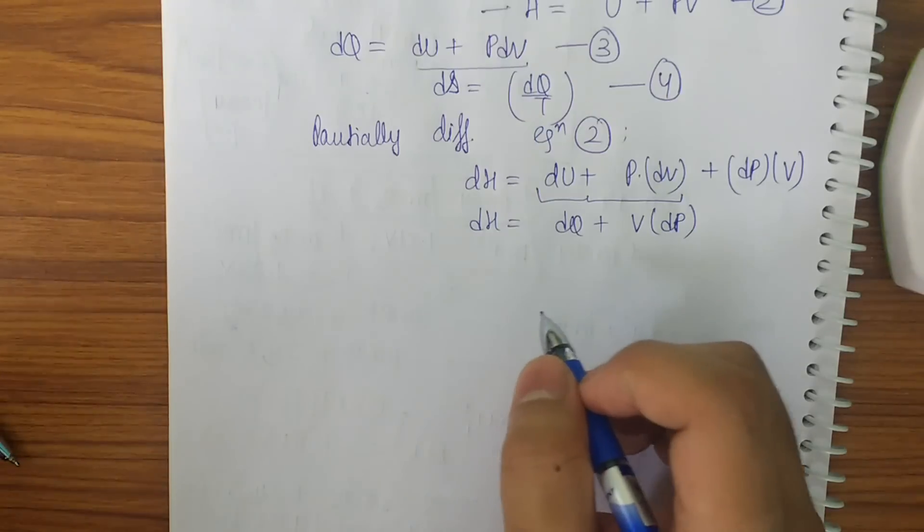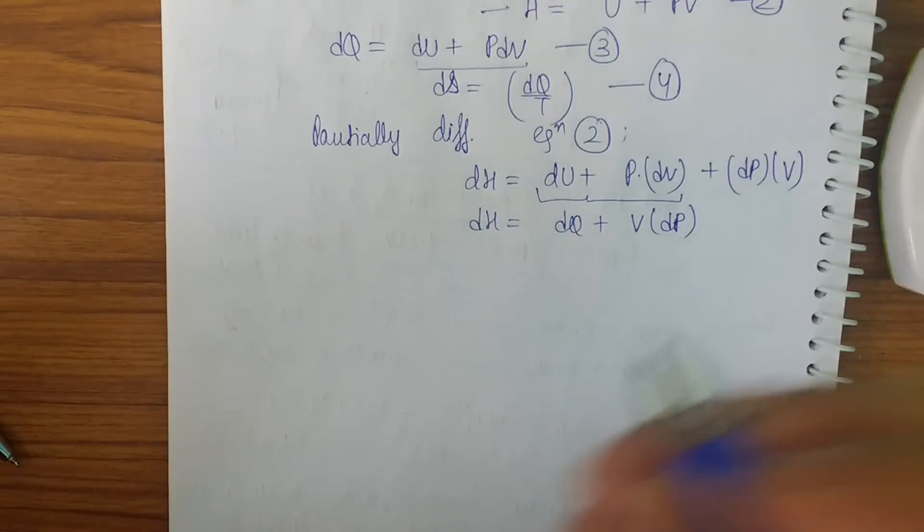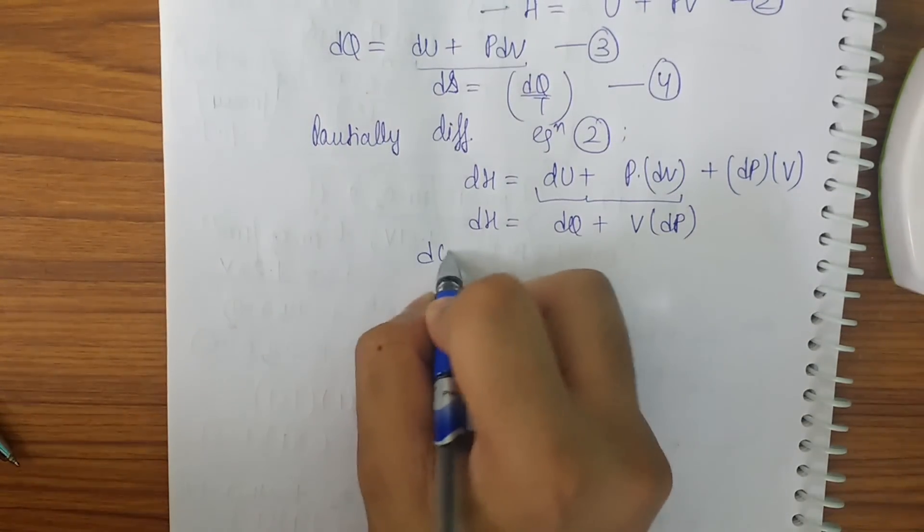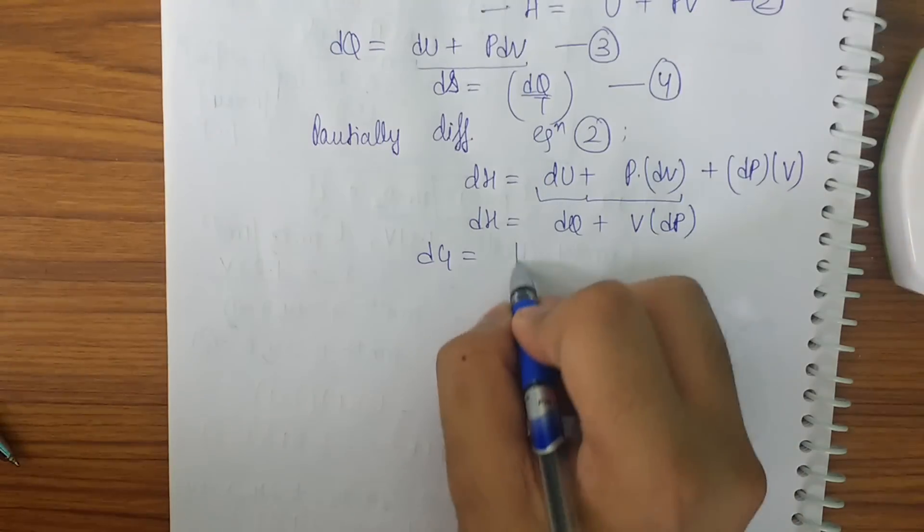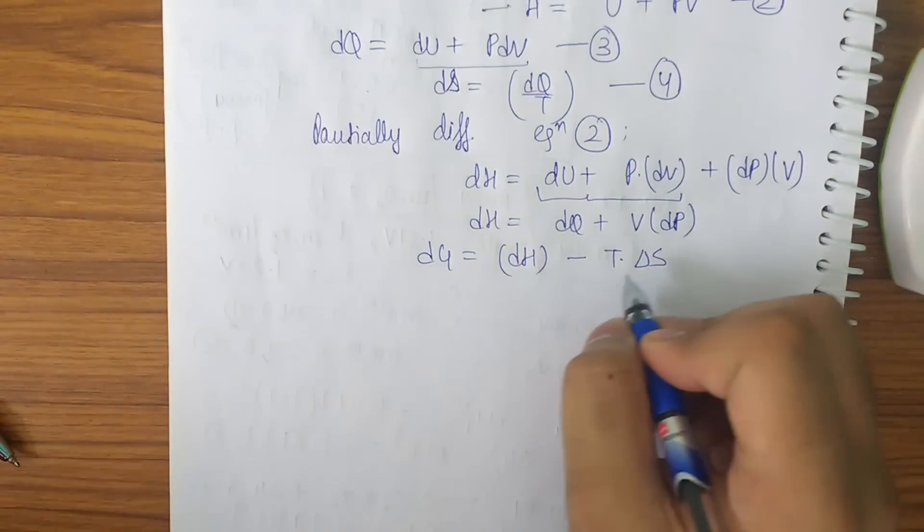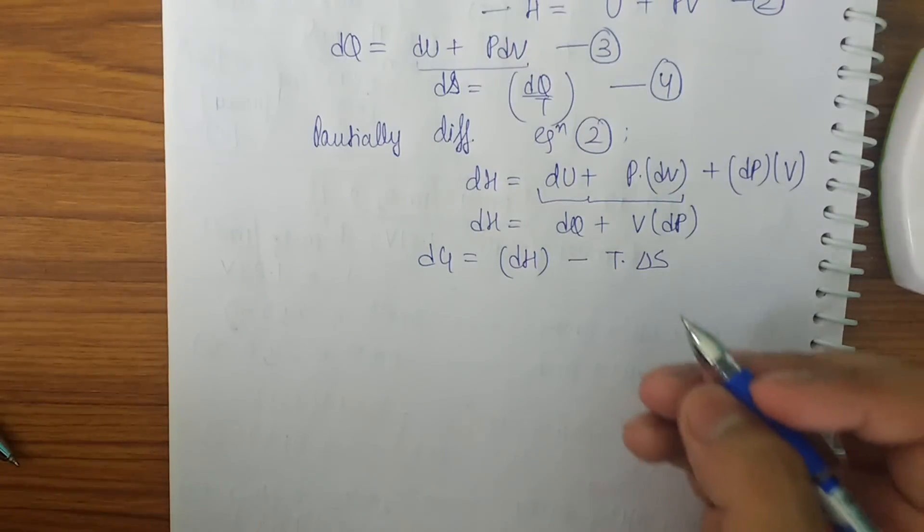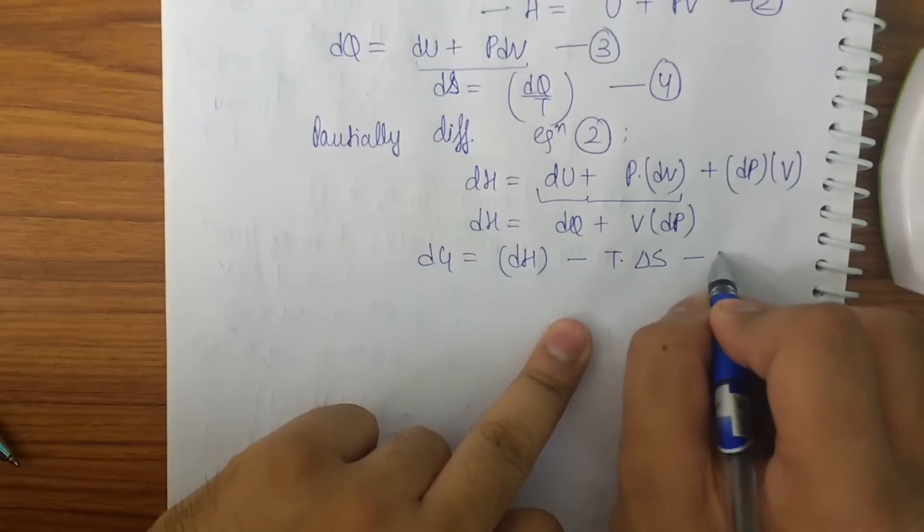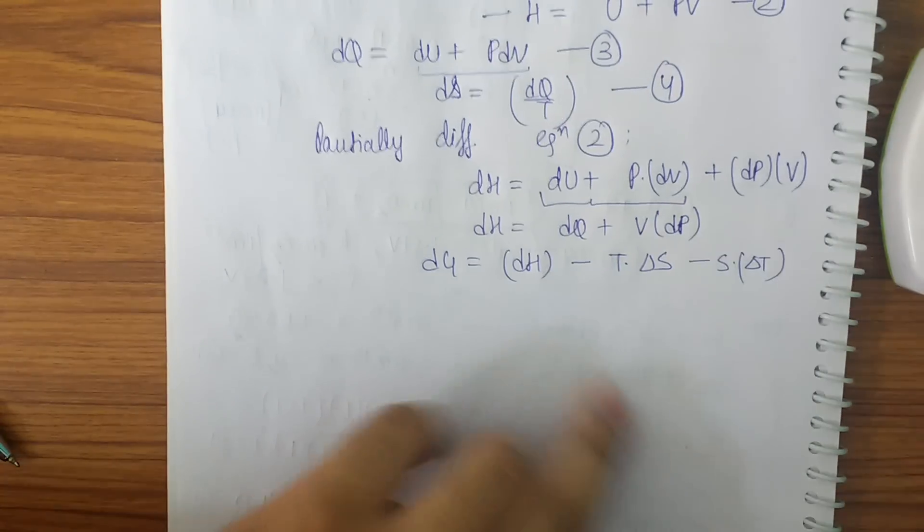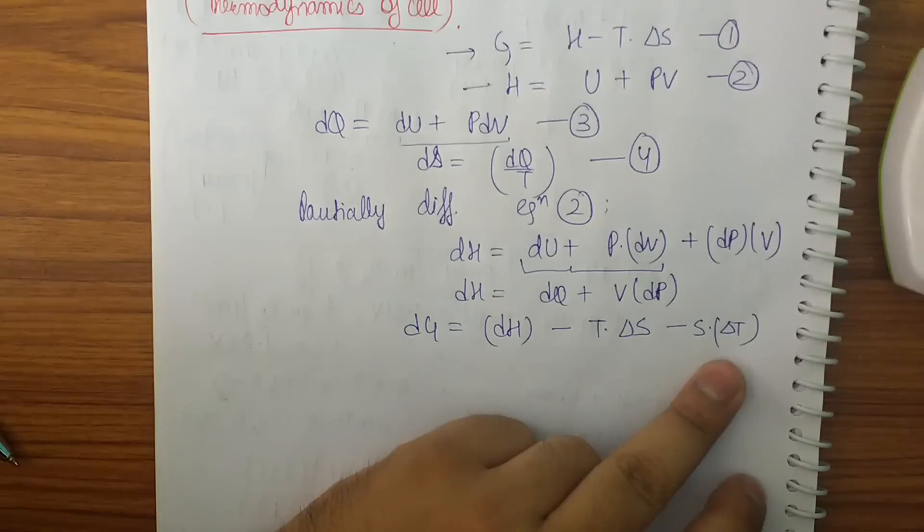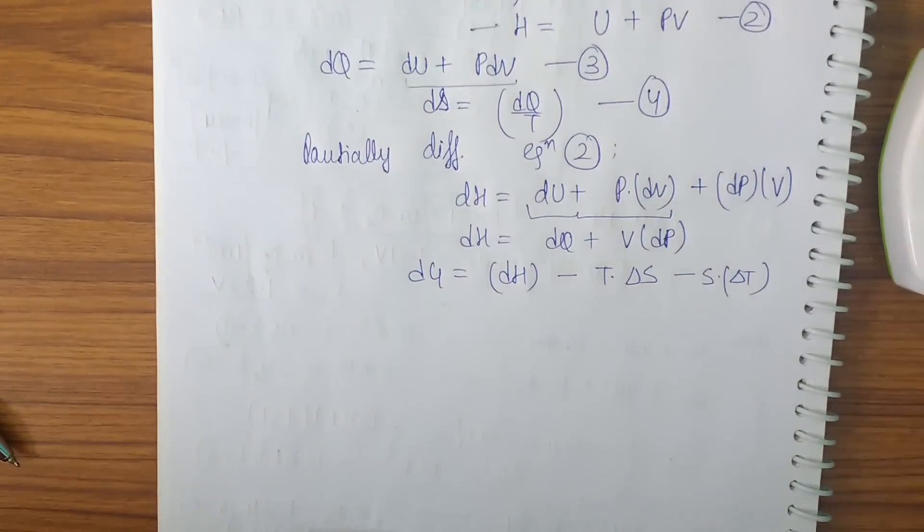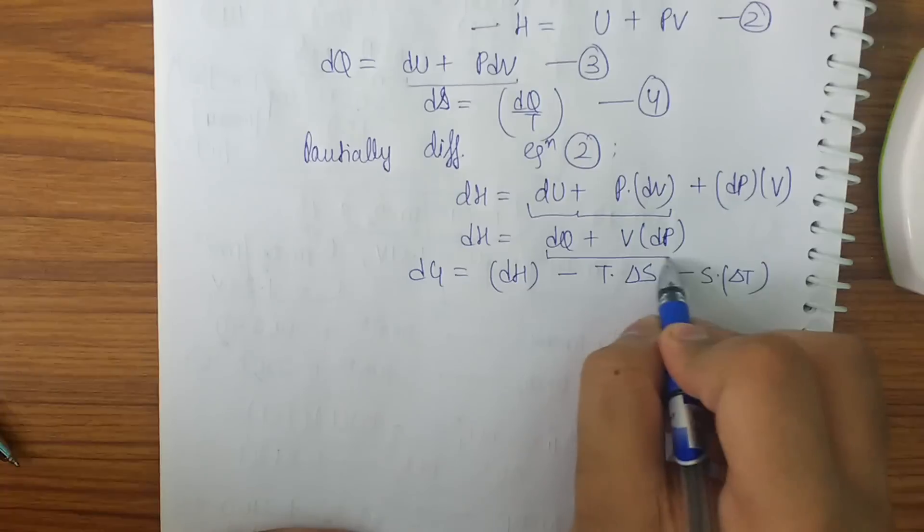Now let's differentiate equation number one. In the similar way we can differentiate equation number one and we can get DG to be DH minus T into delta S. And further, now let's differentiate it further. So you can also find that it will be S into delta T also. We only differentiate S here but the temperature can also be differentiated if it is not a constant.